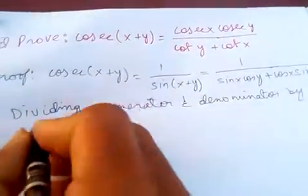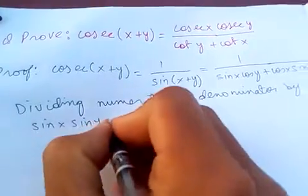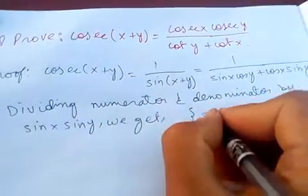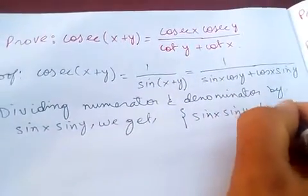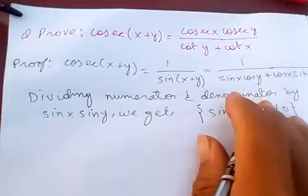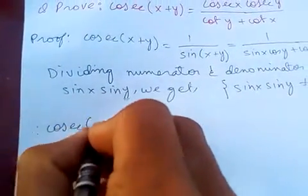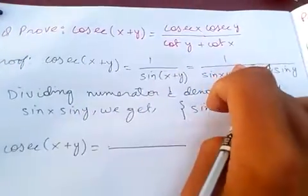by sine x sine y, so we get... and we should remember that sine of x sine of y is not equal to zero. So cosec of x plus y is equal to...